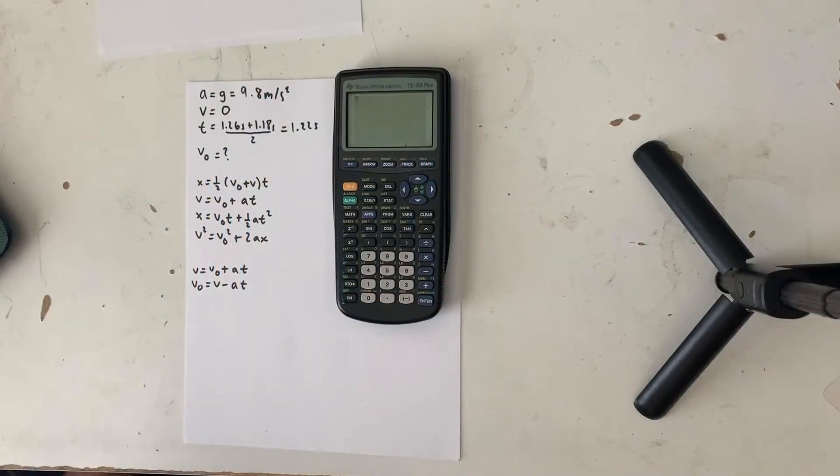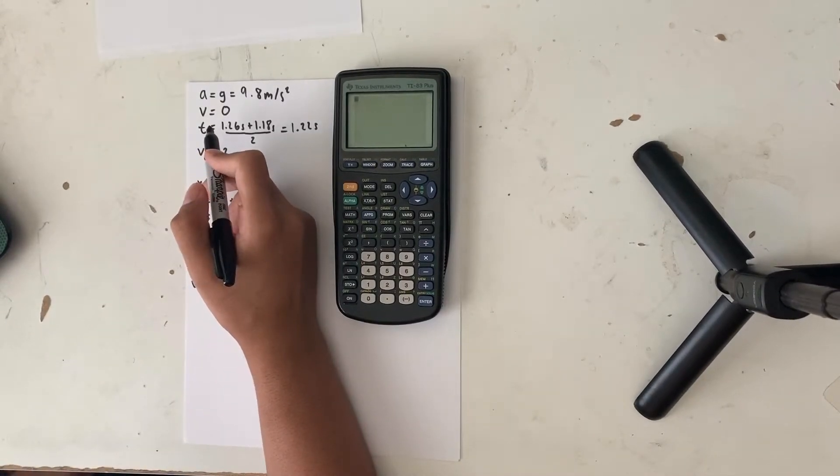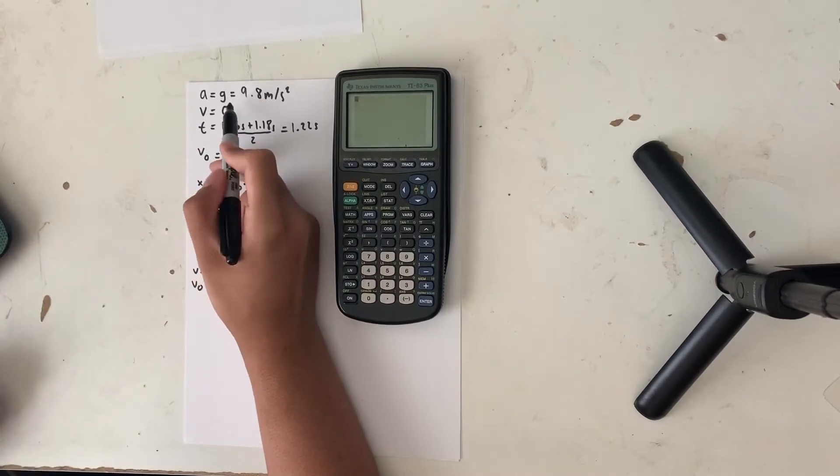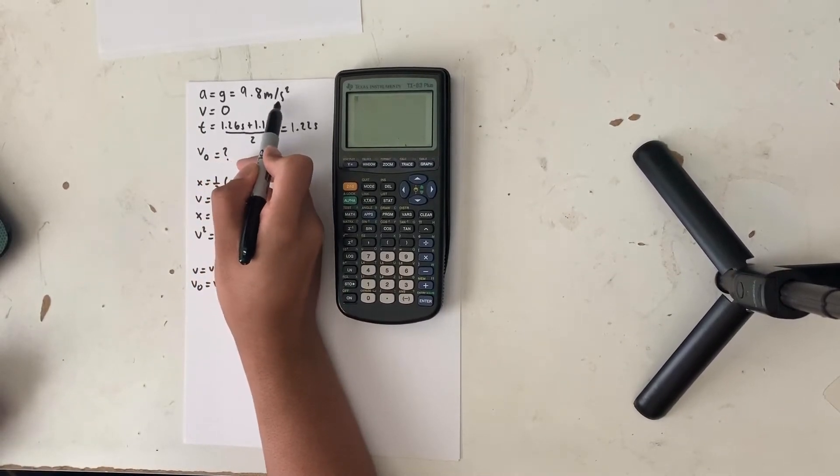So let's start out with the information we already know. To make this problem more direct of our goal, we are going to ignore air resistance. So this means that acceleration due to gravity is going to be equal to 9.8 meters per second squared.